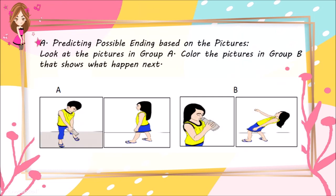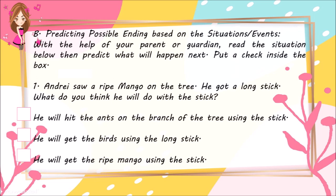Predicting possible endings based on the pictures: look at the picture in group A. Color the pictures in group B that shows what happened next. Predicting possible endings based on the situations or events: with the help of your parent or guardian, read the situation below then predict what will happen next. Put a check inside the box. Number 1: Andre saw a ripe mango on the tree. He got a long stick. What do you think he will do with the stick?